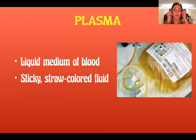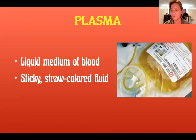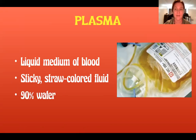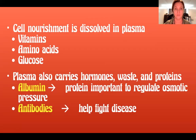Plasma is the liquid medium. It is a sticky, straw-colored fluid — you can see there that somebody has donated plasma. It is 90% water. The nourishment for cells is dissolved in the plasma, and that nourishment includes vitamins, amino acids, and glucose.